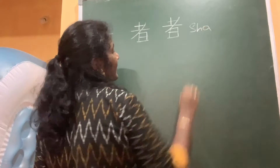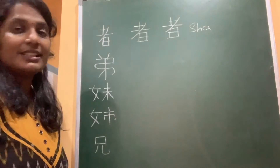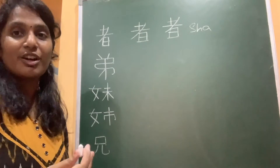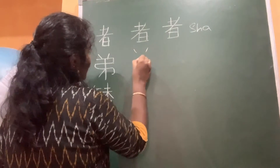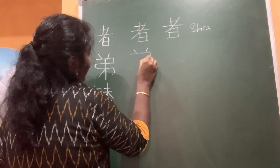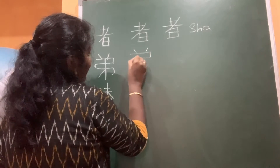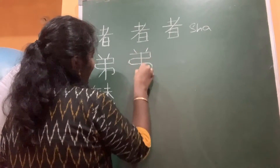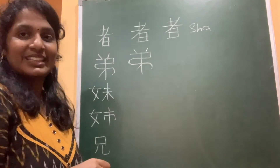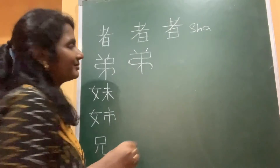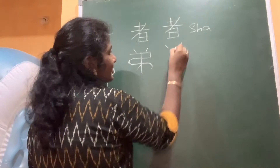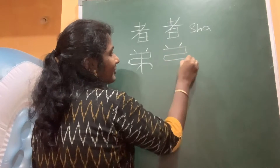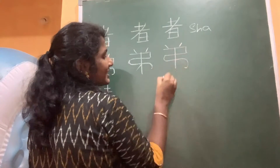This is the kanji which means ototo, 'younger brother'. The stroke order is: one, two, three, four, five, six, and seven. So ototo, which means 'younger brother', is written in seven strokes.